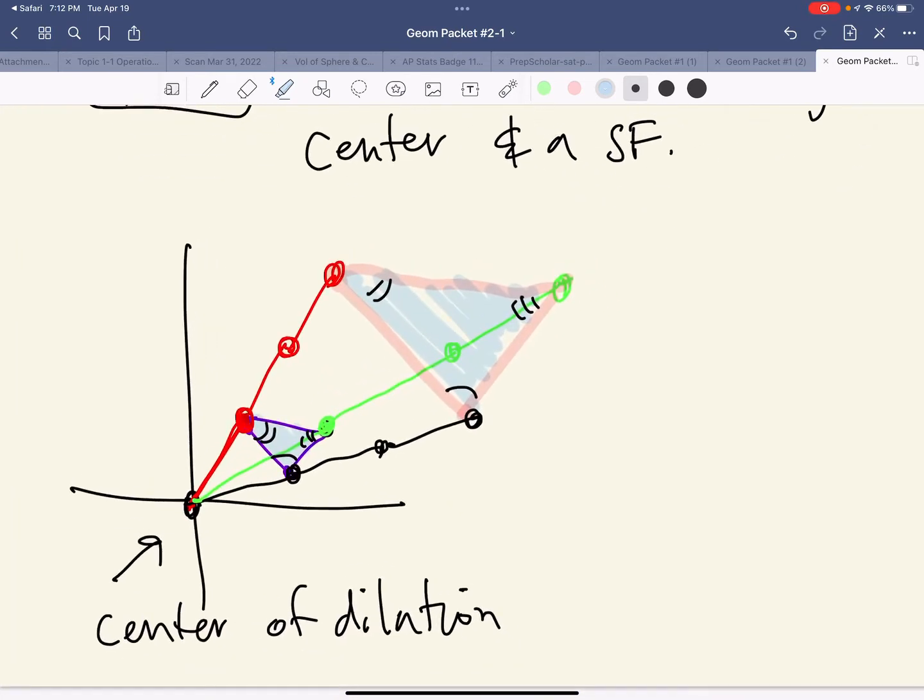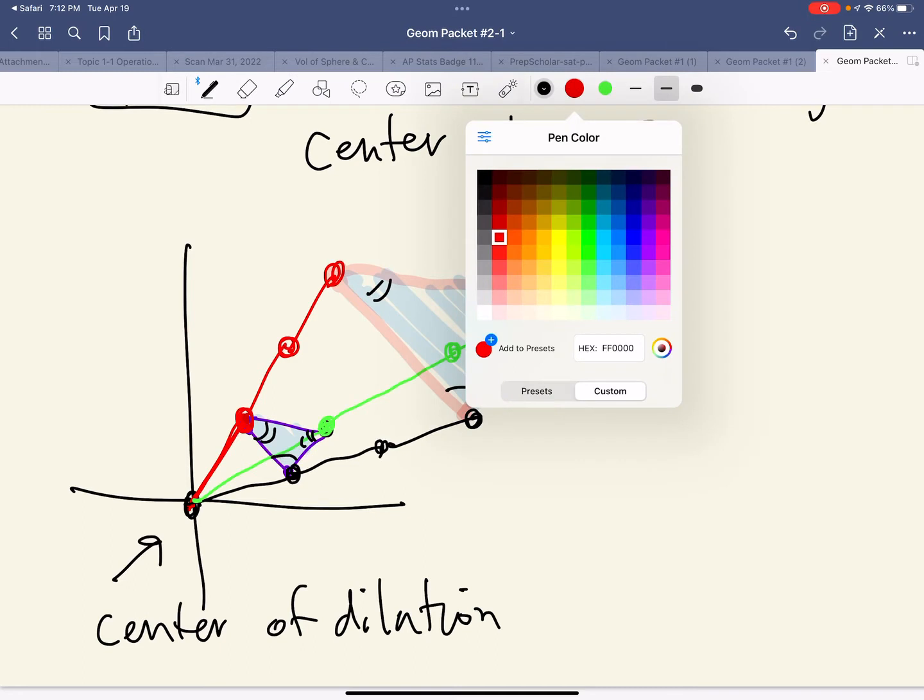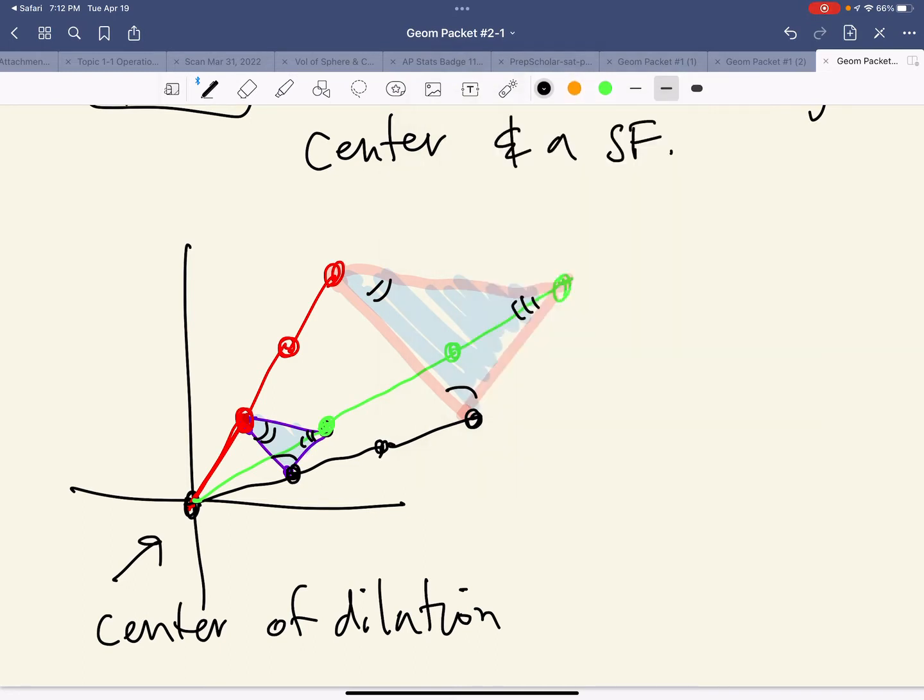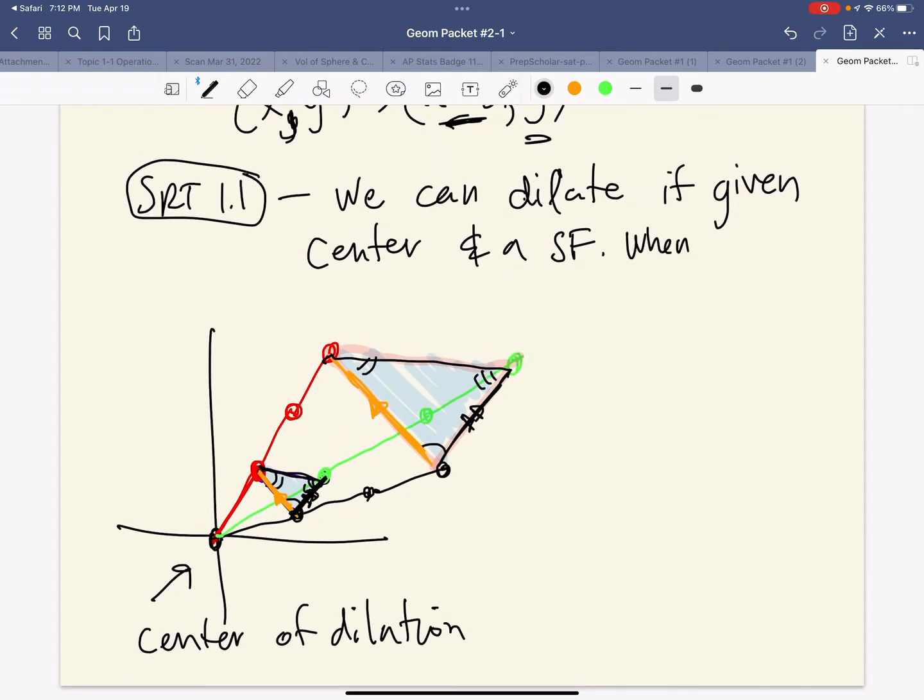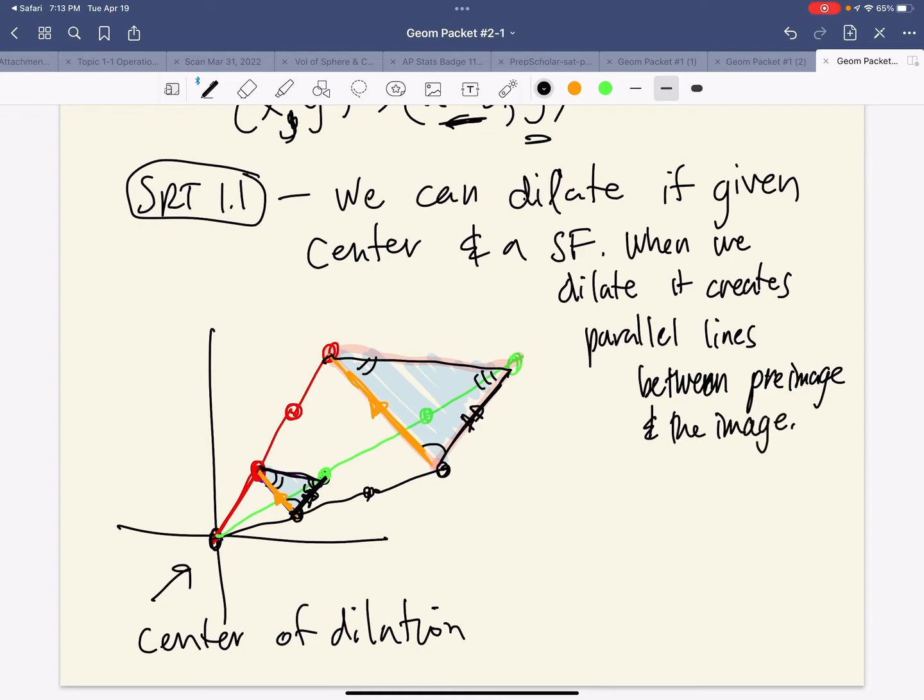So let's take, again, back here to our drawing board, back in our notes in our notebook. We see that these lines, after I dilated it, are parallel. Don't these look like they are parallel? They're never going to meet. So when I dilate, this line and this line are parallel. This line and this line are parallel. So we notice that when we dilate, it creates parallel lines between the pre-image and the image. That is our observation.